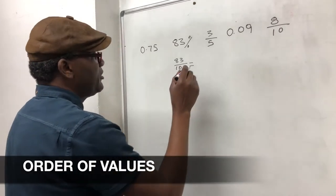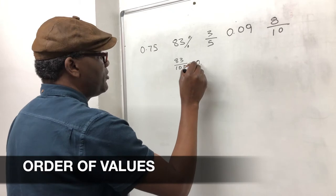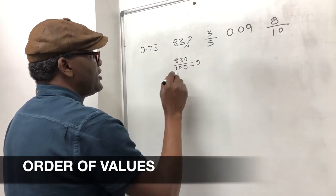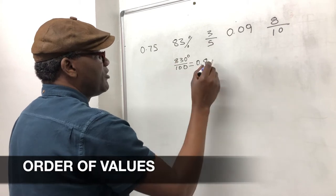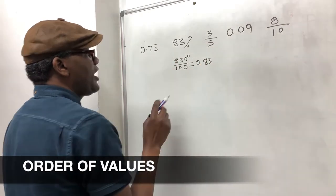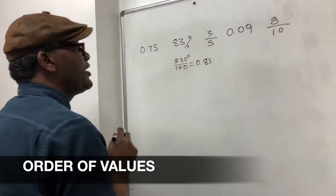How many times does 100 go into 83? It doesn't go. You put a zero there and you put a point there, you add a zero. That goes eight, and then you just cross that out, put a zero, three. So that one is 0.83.